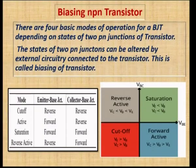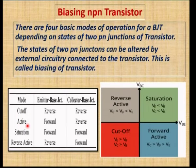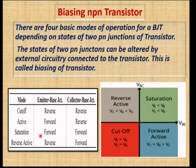The transistor can be used as a switch as well as an amplifier. When used as a switch in digital electronics, the transistor operates in cutoff mode (off state) and active mode (on state). When operating in saturation mode, we can use the transistor as an amplifier. These are the important modes of operation of a transistor.